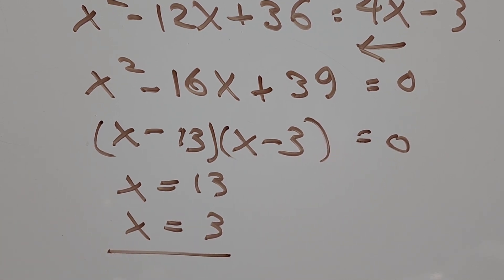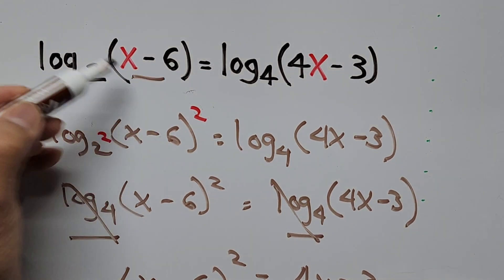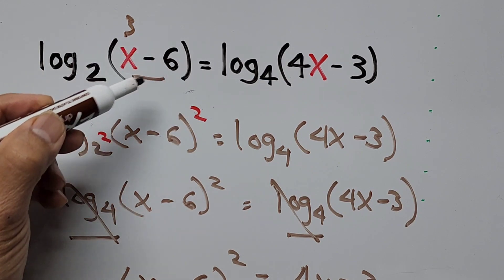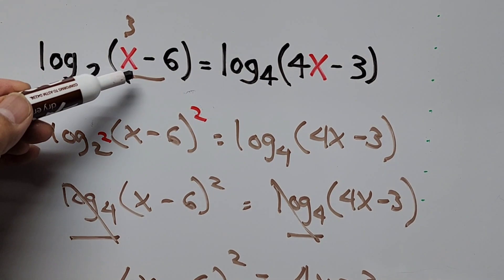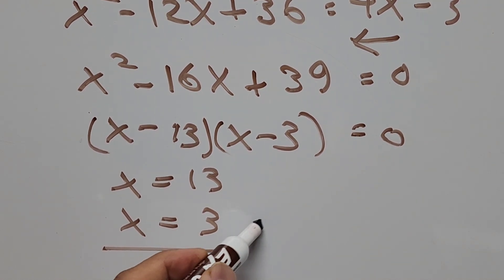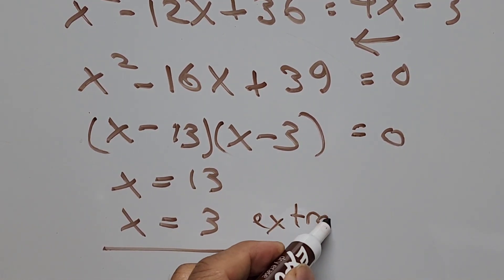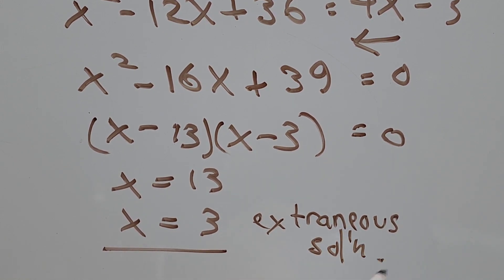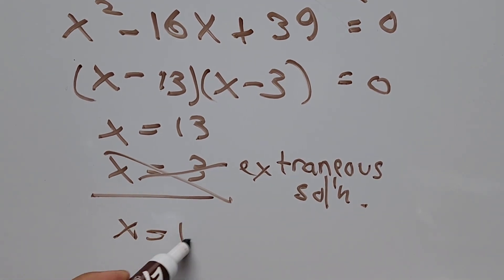But then x equals 3, if we go back to our original equation above, we will have a negative value of the argument. This is gonna be 3 minus 6 is negative 3, so we cannot take the log of a negative number. So x equals 3 is an extraneous solution, we cannot take that. We have x equals 13 as our final answer.